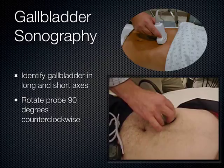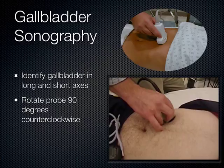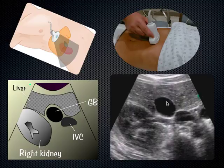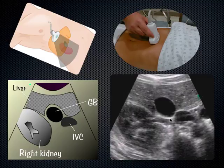When you go to the short axis from the long axis, things start to look like circles. You'll see the aorta, the IVC, and the gallbladder. The way to know that's the gallbladder is the main interlobar fissure, and also the fact that in this axis the gallbladder is the most anterior anechoic structure on the screen — the closest anechoic structure to the skin line.